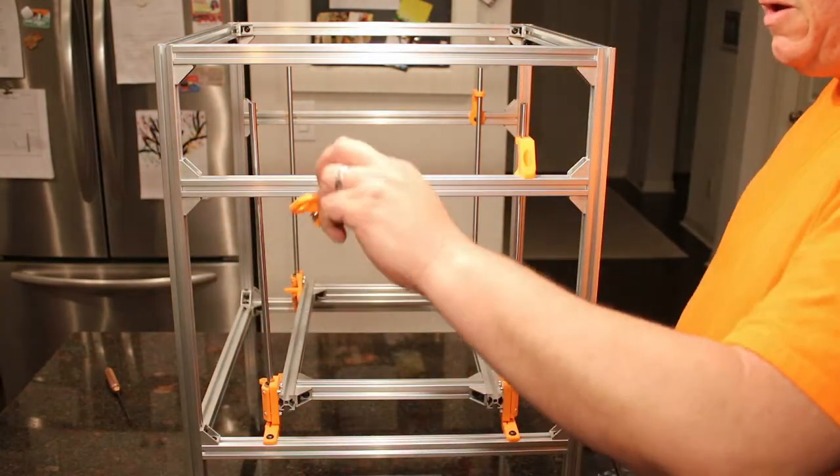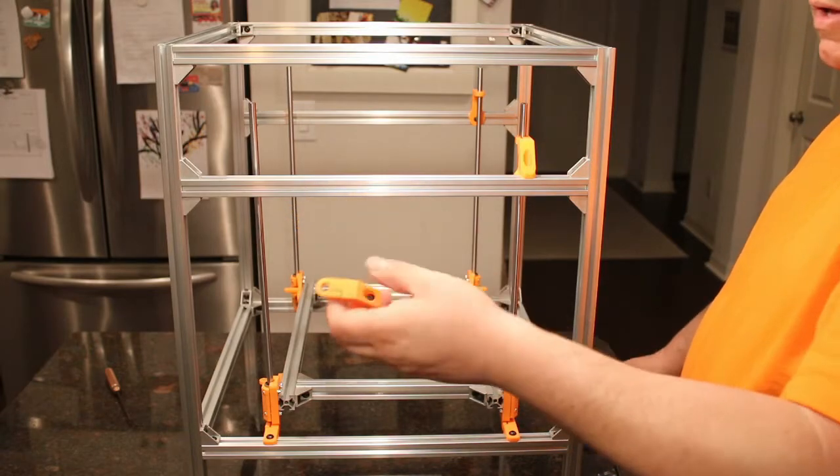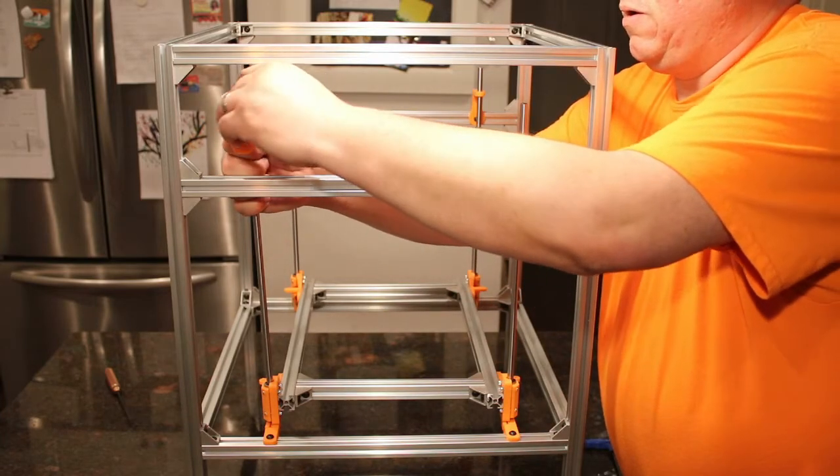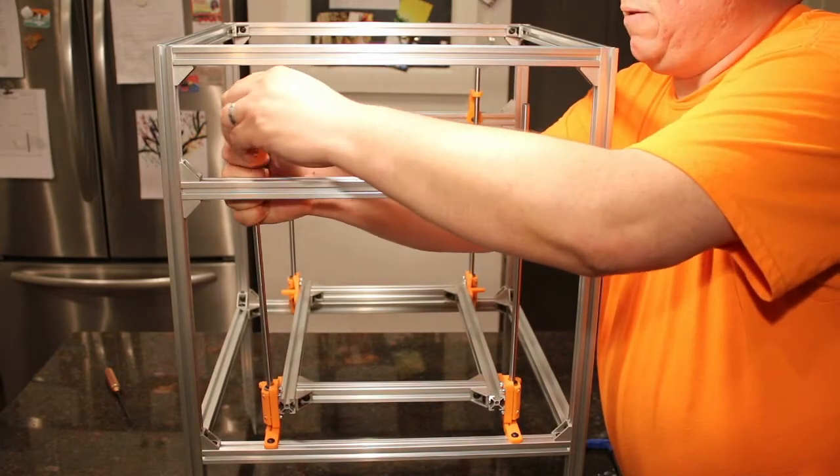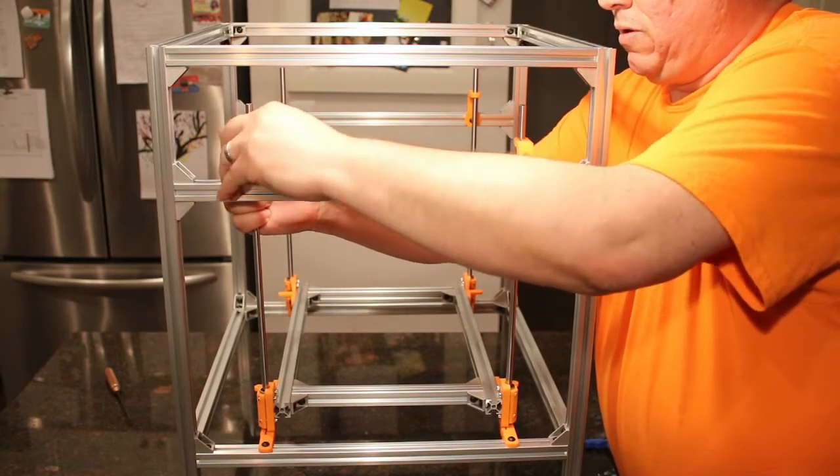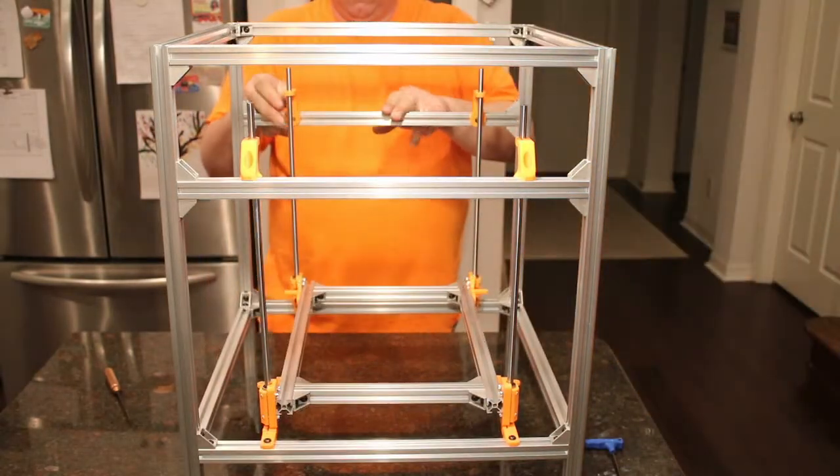I went ahead and put the T-nuts through the upper Z-rod holders, and now we're going to place those. Just gently work them onto the top of the rods, and push them down, like so, on both sides.